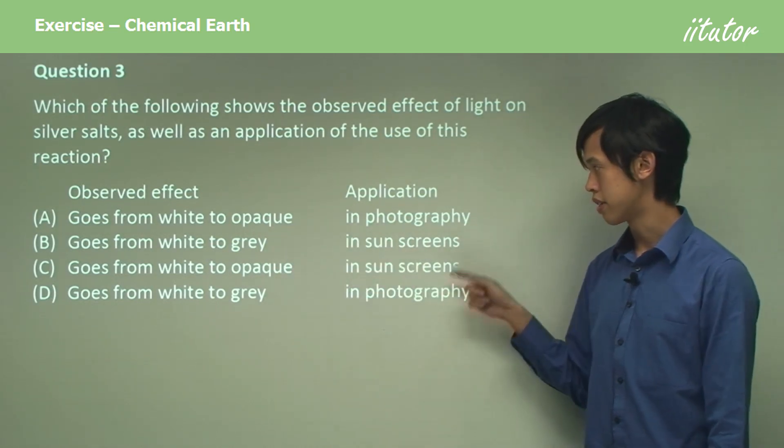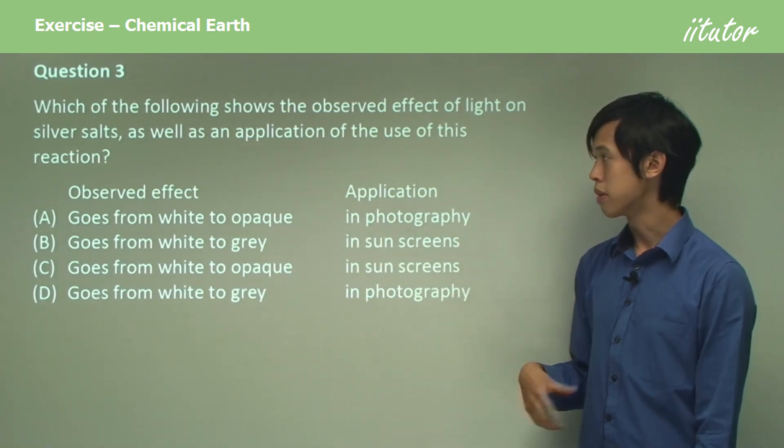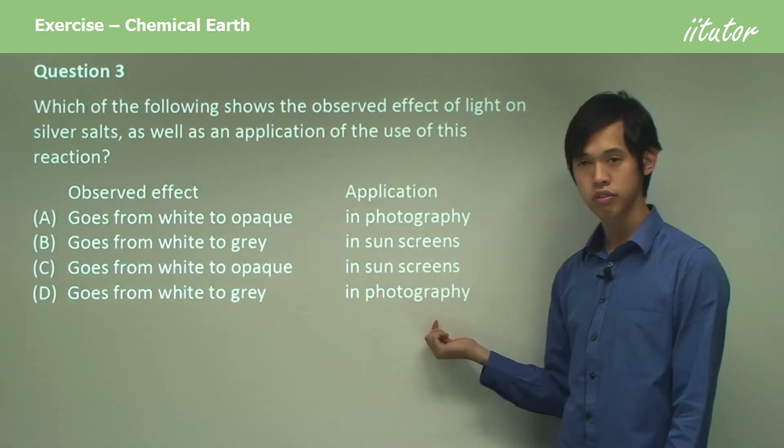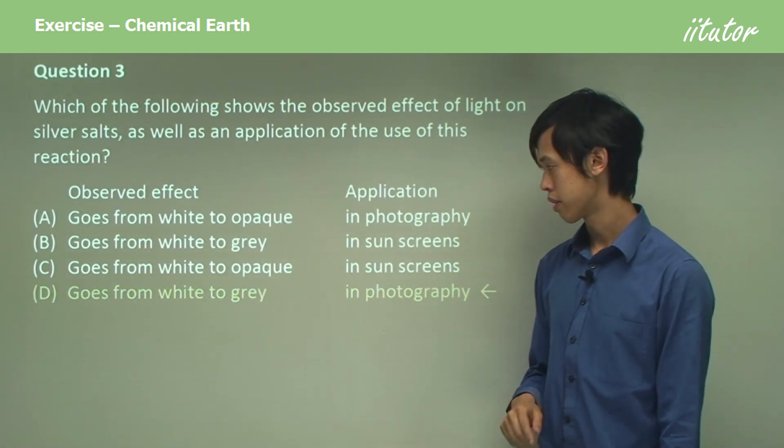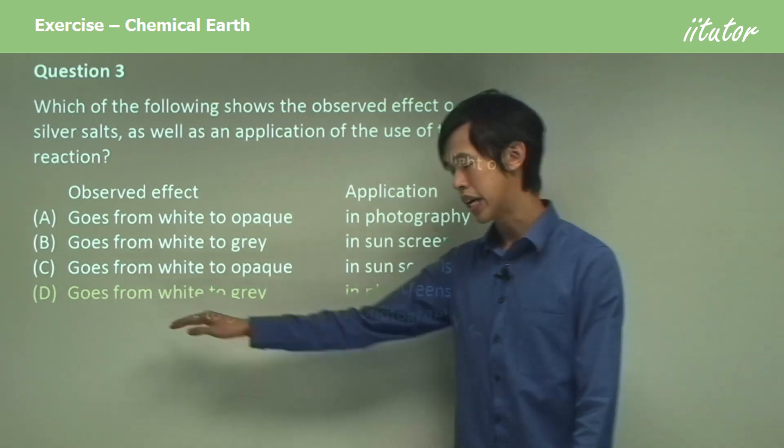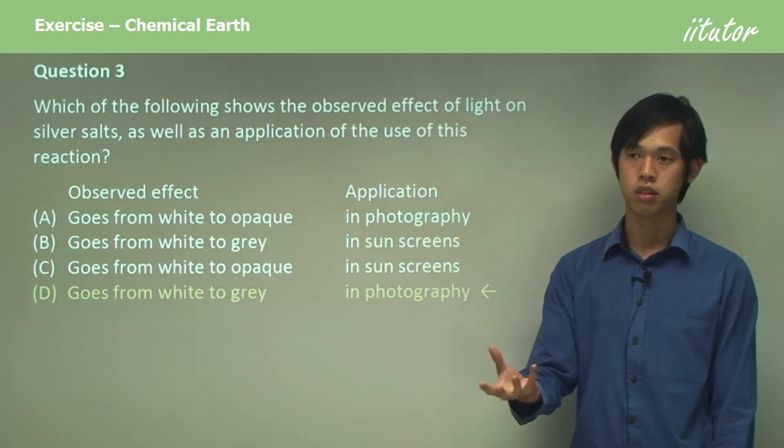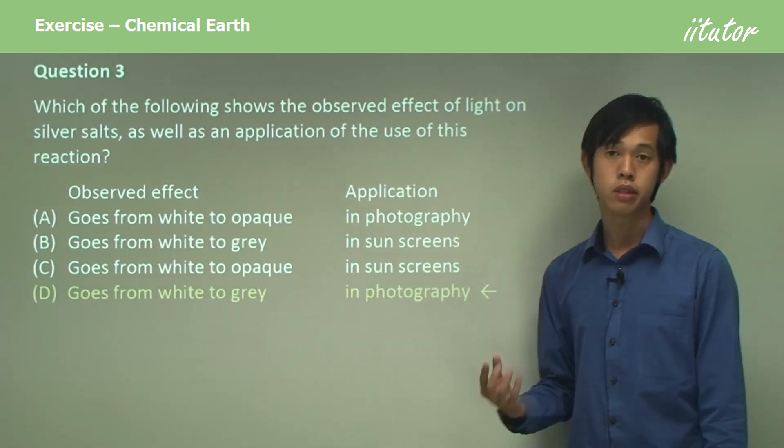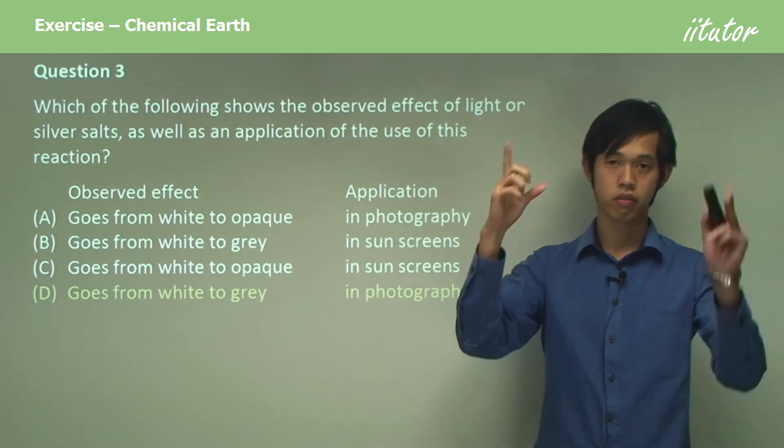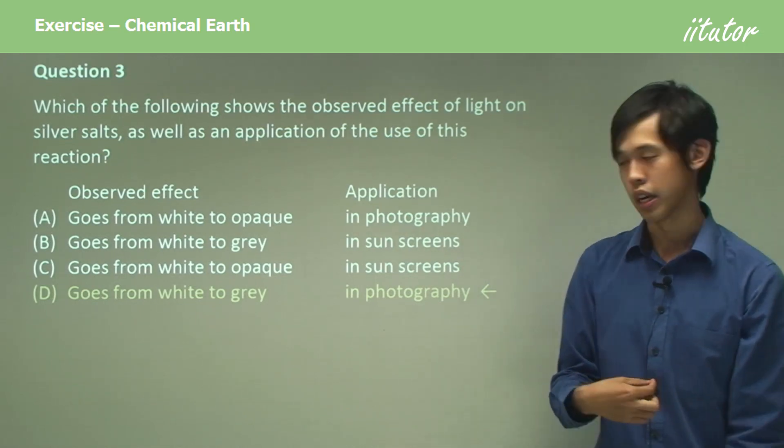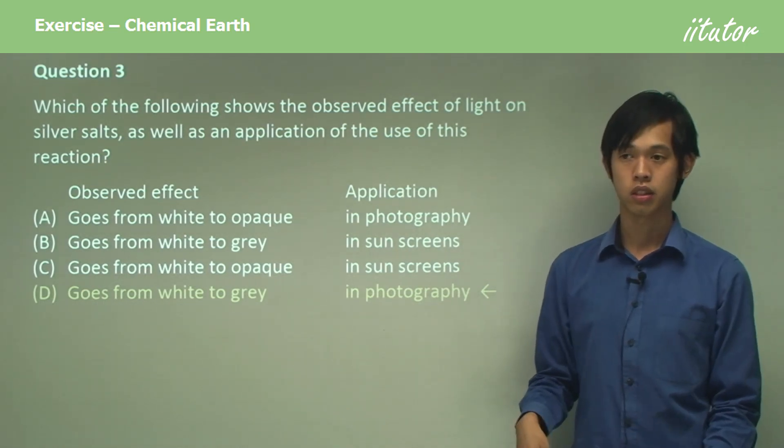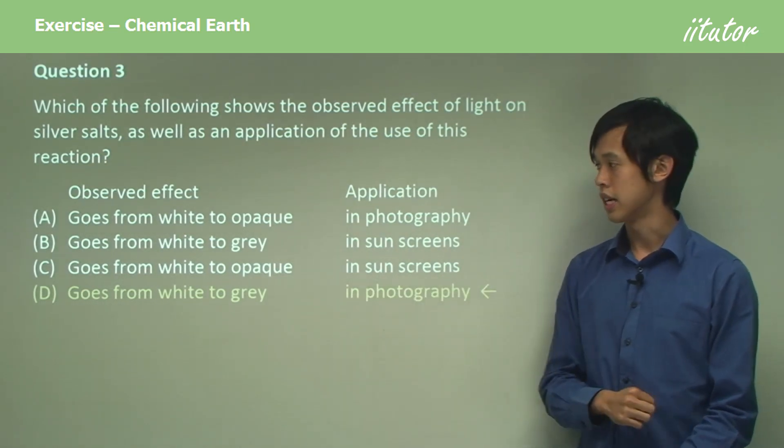These are the same, so we have to pick based on the application. We know silver salts are used in photography and not sunscreens, so it's got to be D. The salt goes from white to gray when it's exposed to light, and we use that in photography because it can preserve which parts are dark and which parts are light, and then we can make a photograph. So that's our answer.